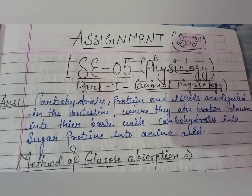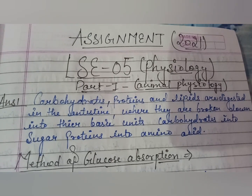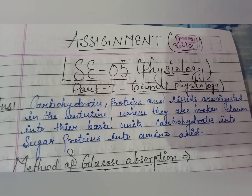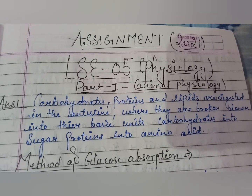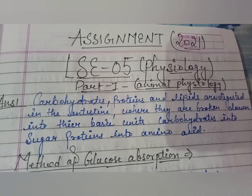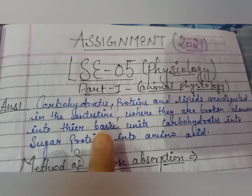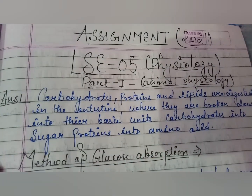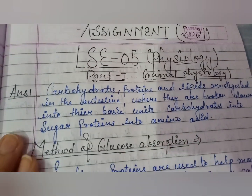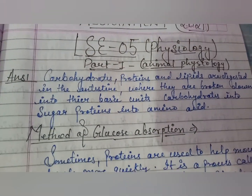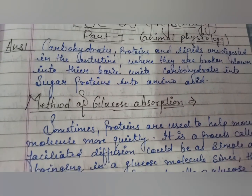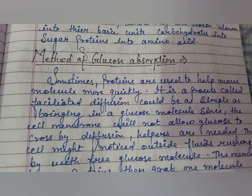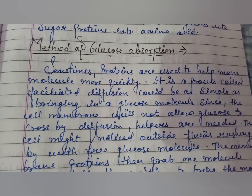Welcome back to my channel. In this video I have uploaded Assignment 2021 LC05 Physiology, in which Part One is Animal Physiology. The first question is methods of glucose absorption.